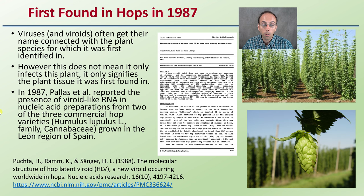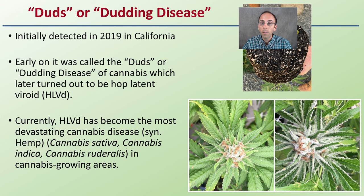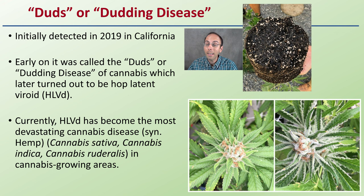In 1987, there was the first report of the presence of a viroid-like RNA in nucleic acid preparations from two of three commercial hop varieties grown in Spain. The original article was published in 1988. This viroid was originally called 'duds' or dudding disease, initially detected in 2019 in California — so from 1987 to 2019, quite a long time. Early on it was called dudding disease of cannabis, which later turned out to be Hop Latent Viroid.